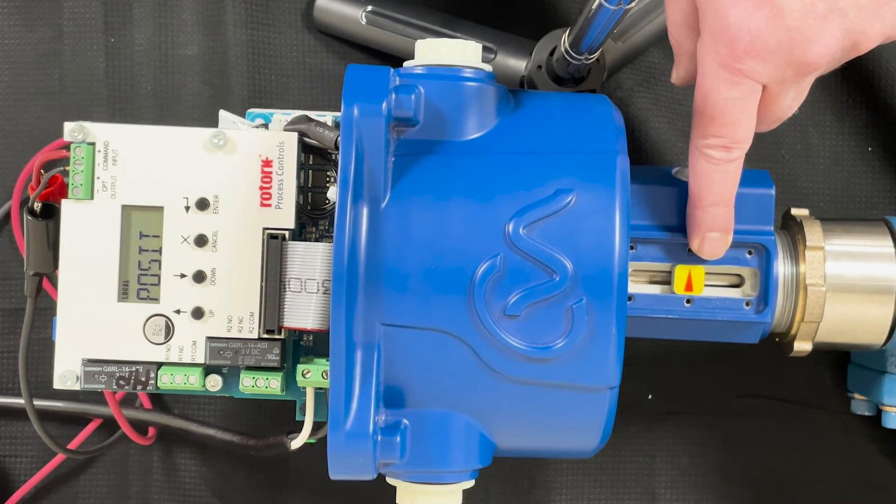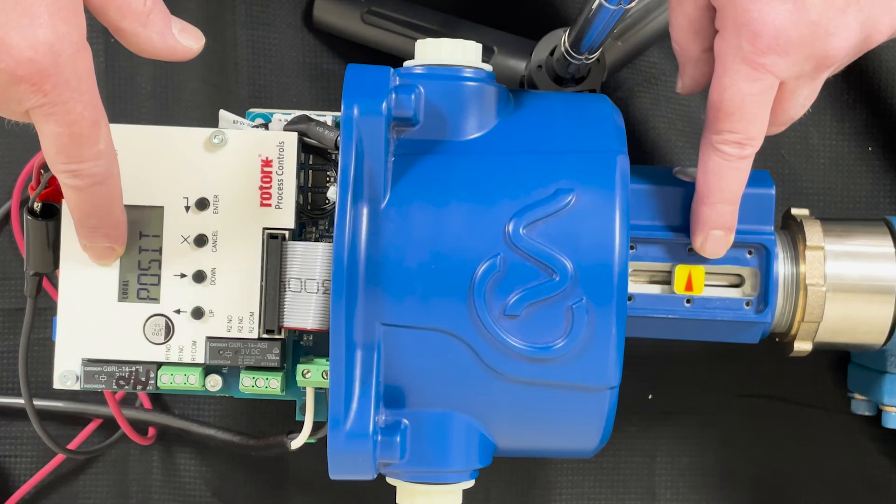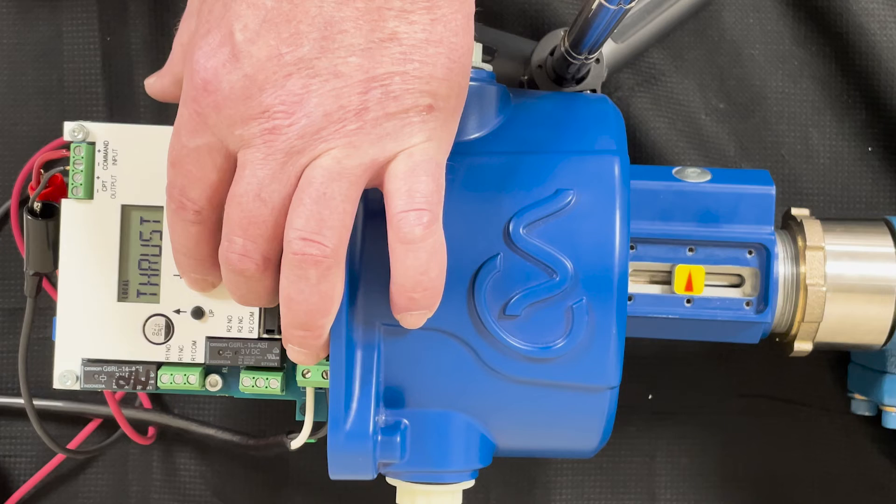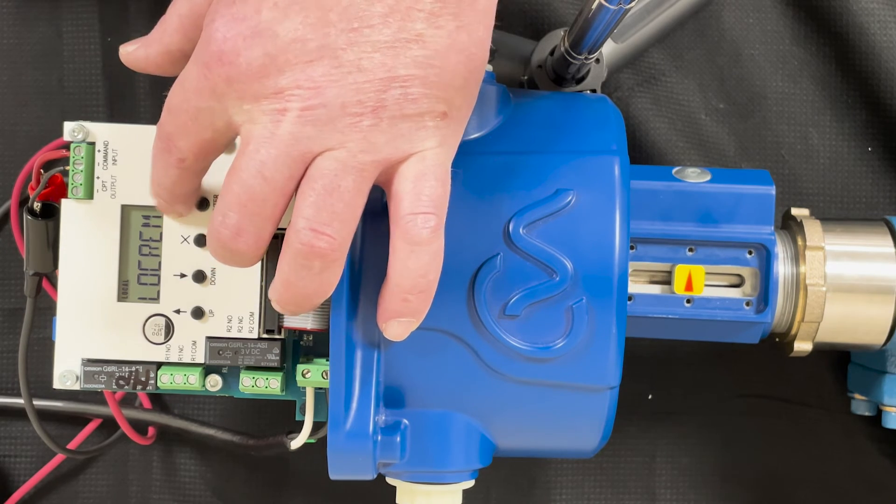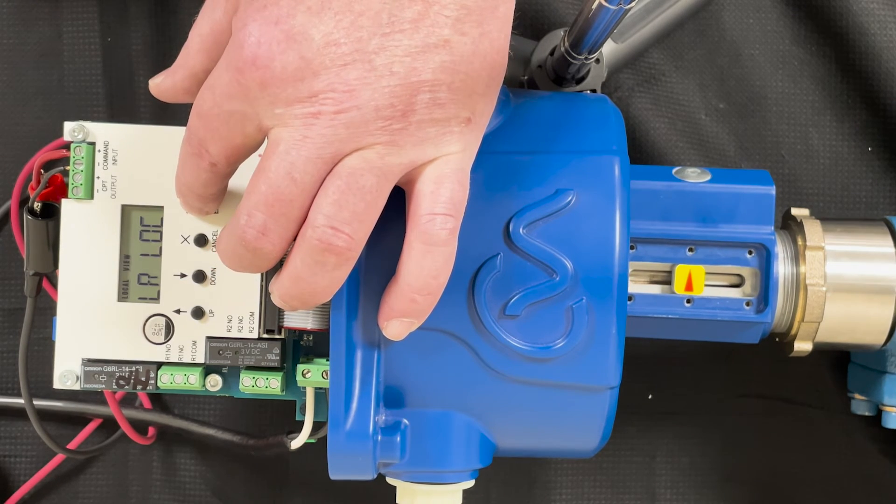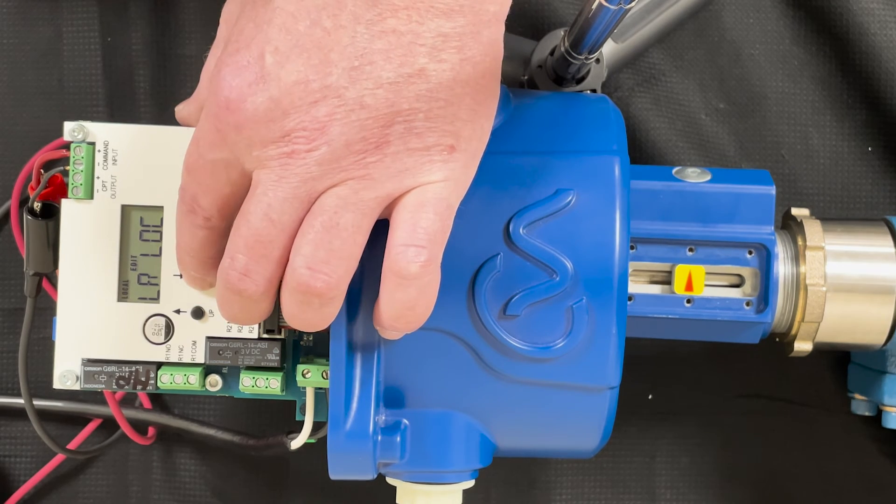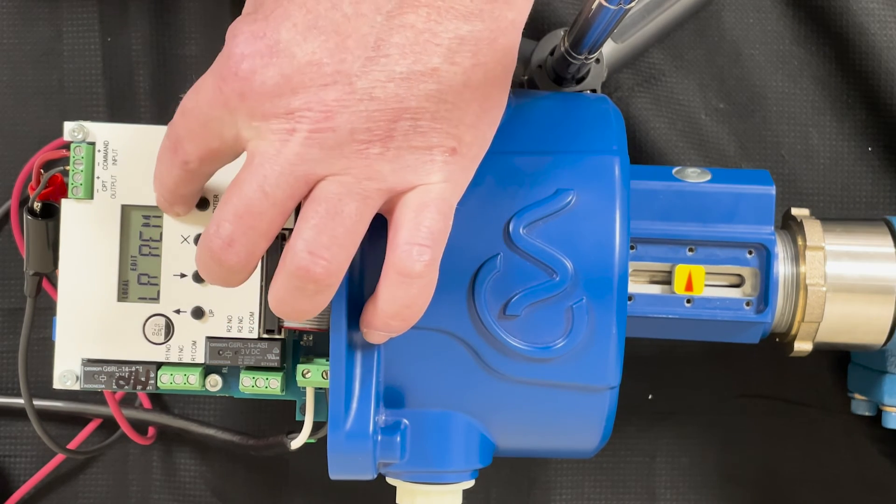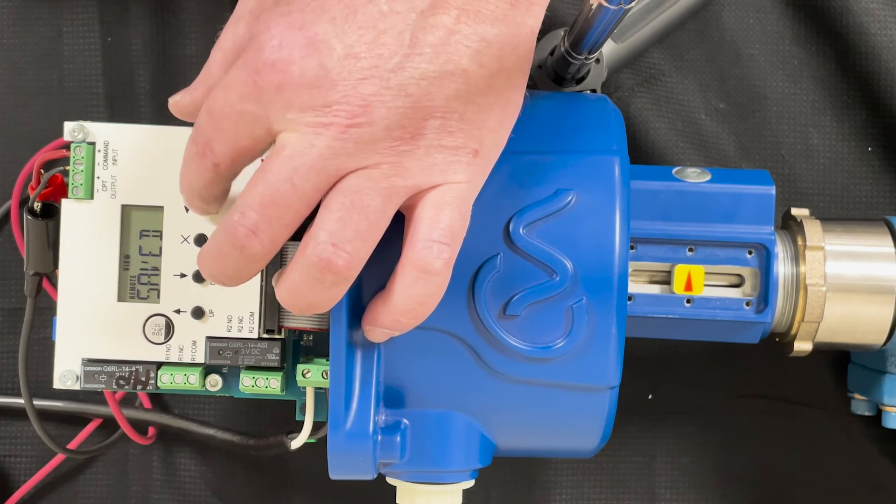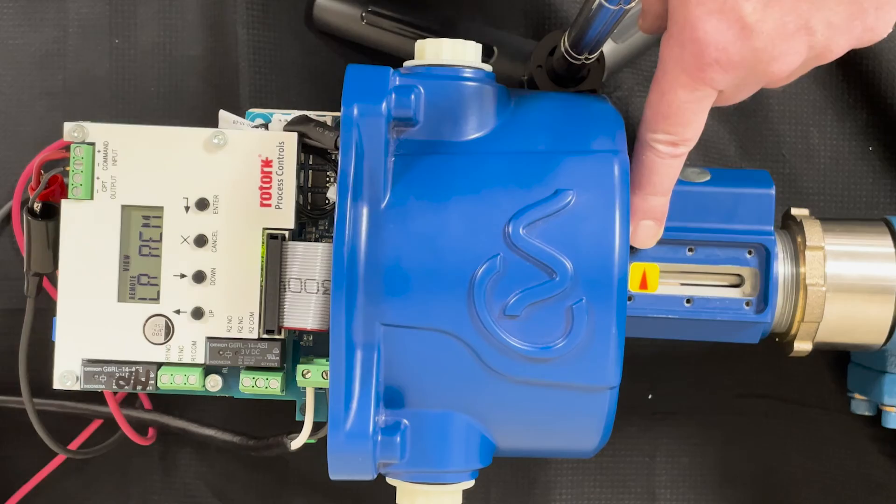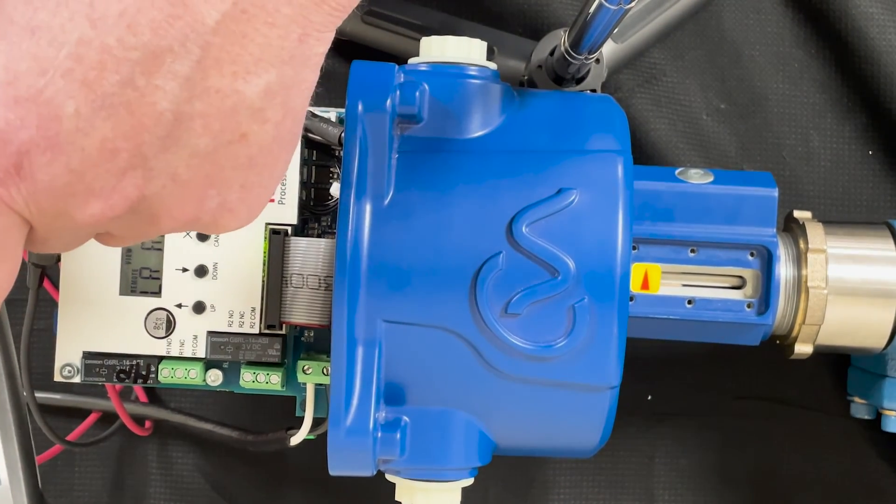If you remember: go one, two, three, remote. Hit enter, hit enter again, edit, remote, and that saves it. You can see it's already moving because I already have a 4 milliamp signal to it, and that's where we set it.